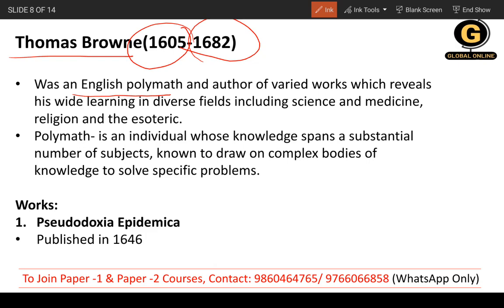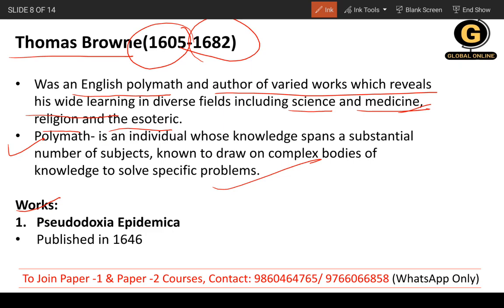The second writer is Thomas Brown, 1605 to 1682. He is considered an English polymath — an individual who has knowledge of many subjects and helps solve very specific problems, providing knowledge of complex bodies of information across many fields. He is the author of varied works revealing his wide learning in science, medicine, religion, and the esoteric.